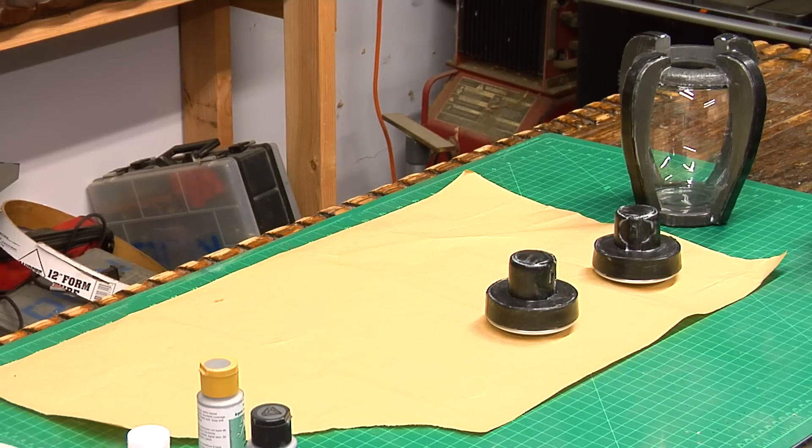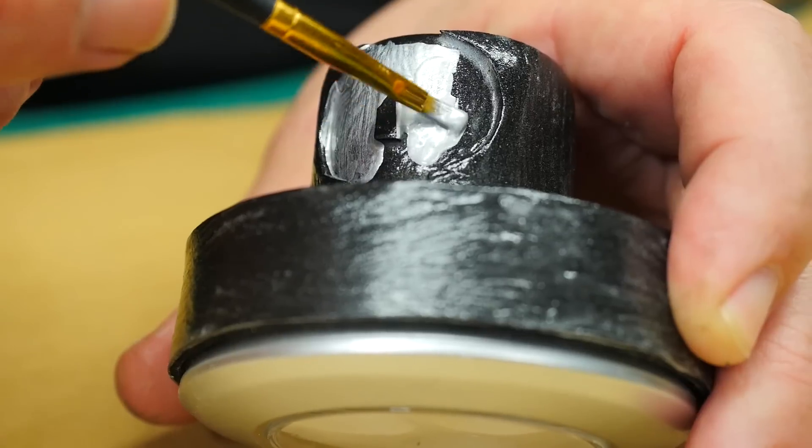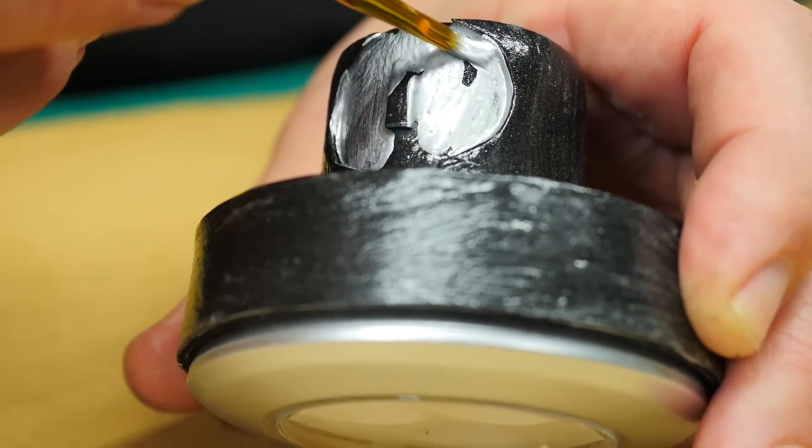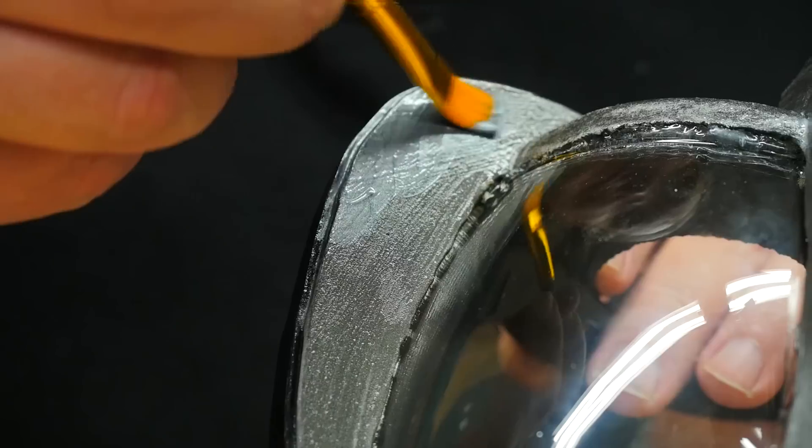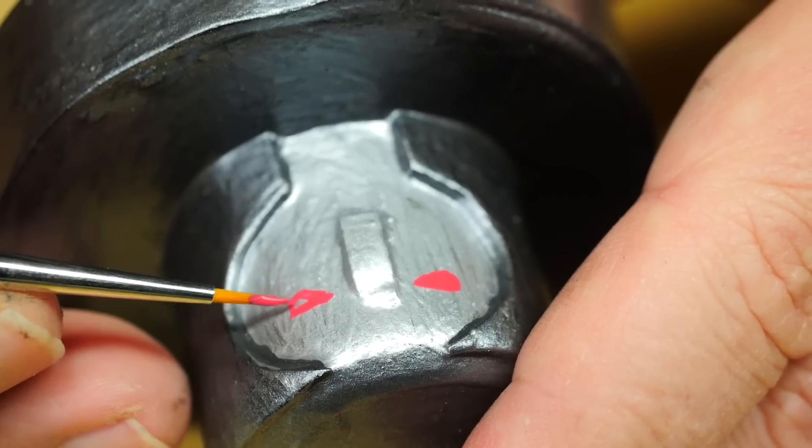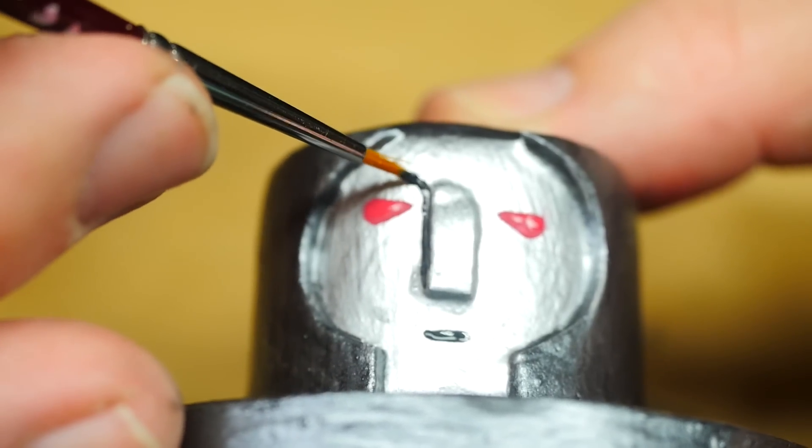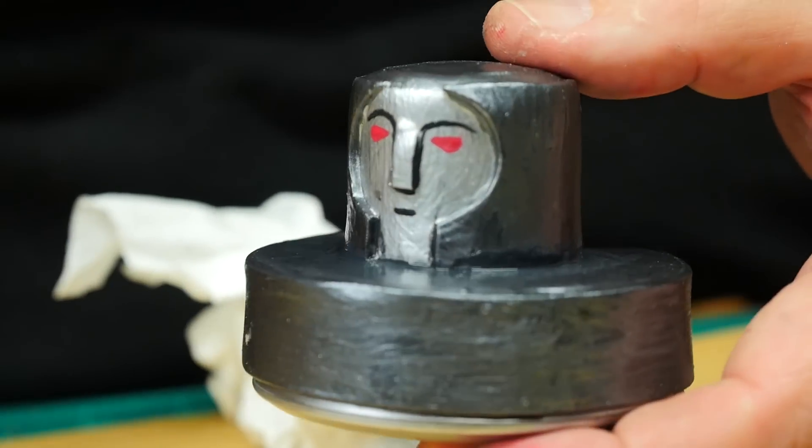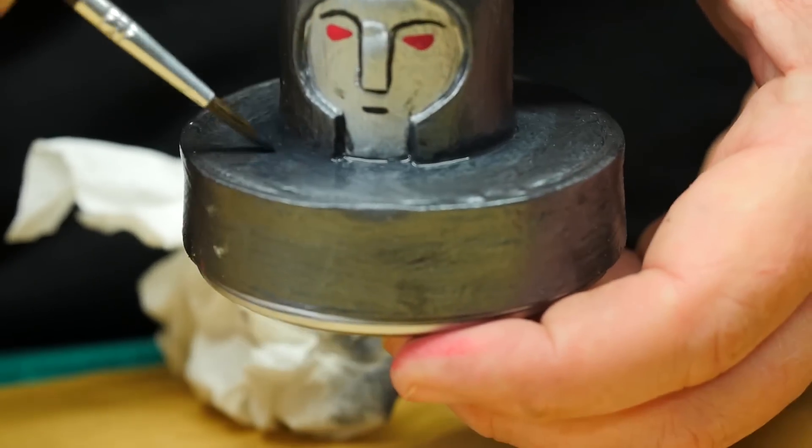After I apply two coats of Mod Podge, I can start to paint the bottles. I'm just going to use acrylic craft paints. The faces are bright silver, and the main body is a dark pewter color. I add red eyes to the face and black lines for the mouth and the eyebrows. I add a little black wash to the stopper, but the pewter color is so dark, I can hardly see the black paint.